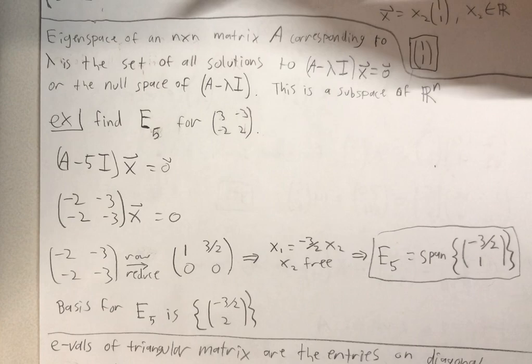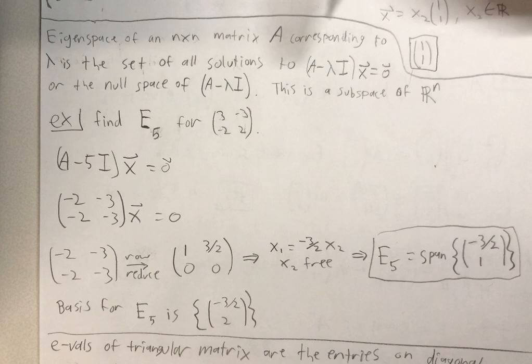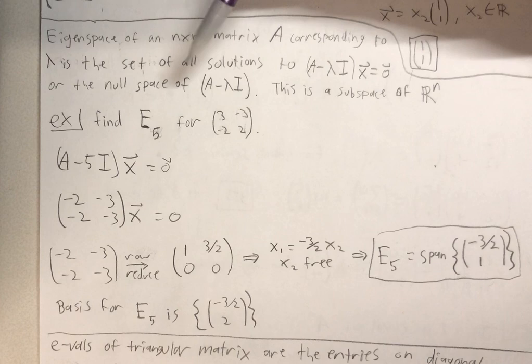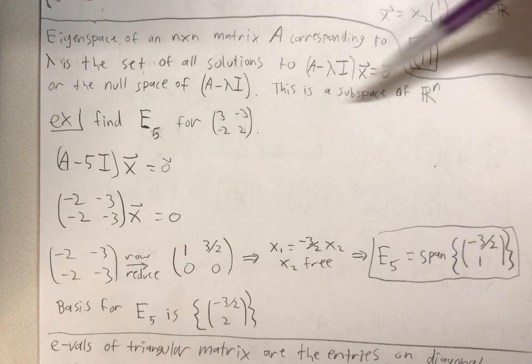Okay, so the eigenspace of an n by n matrix A corresponding to lambda is the set of all solutions to A minus lambda I times X equals 0, or the null space of A minus lambda I. Remember, this is a subspace of Rn.